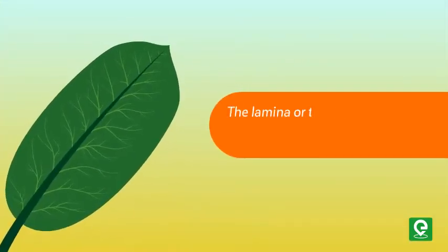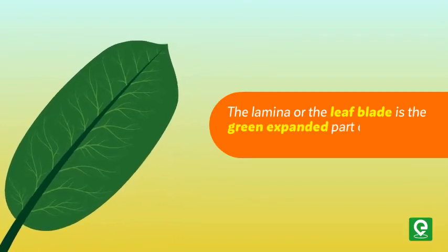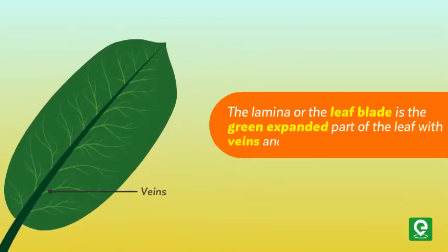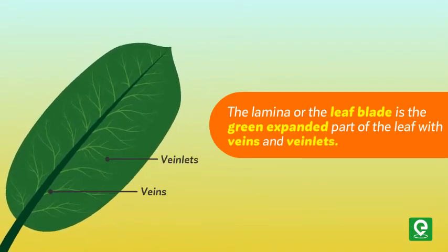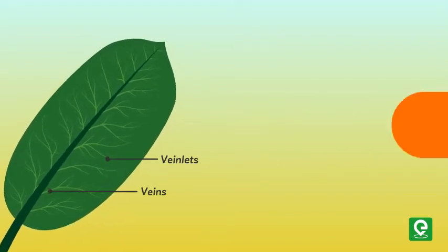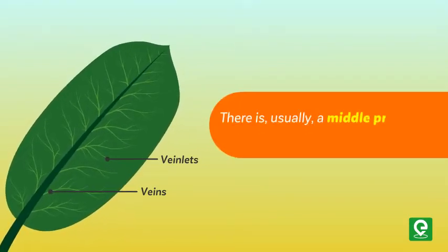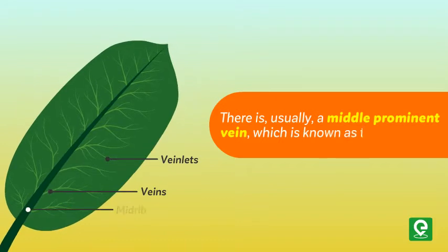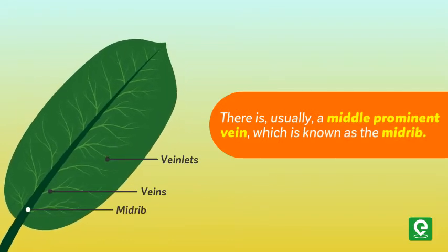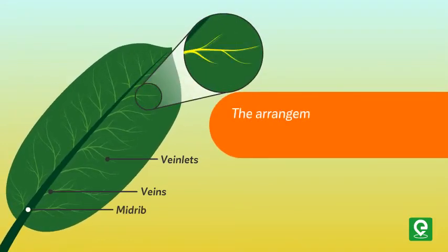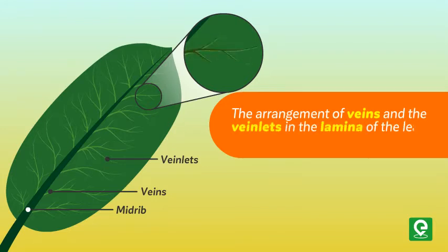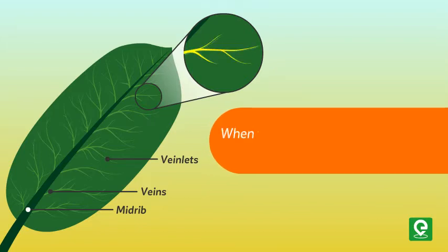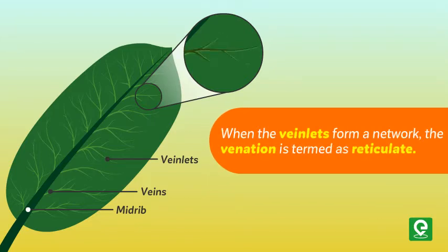The lamina, or the leaf blade, is the green expanded part of the leaf with veins and veinlets. There is usually a middle prominent vein which is known as the midrib. The arrangement of veins and veinlets in the lamina of the leaf is termed venation.